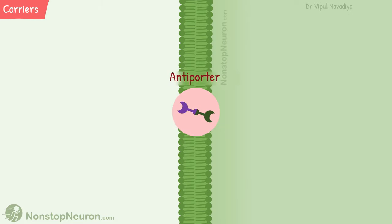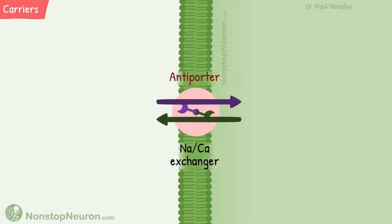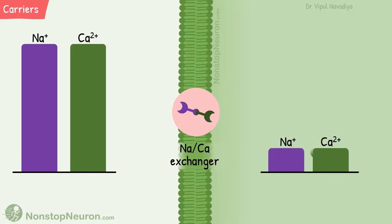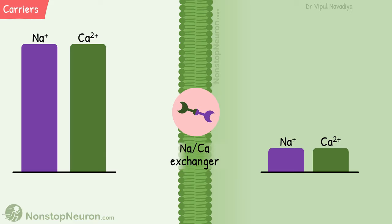Now antiporters — they move molecules in opposite directions. For example, the sodium-calcium exchanger. Sodium and calcium both have higher concentrations outside the cell compared to the inside. The uphill movement of calcium is energized by the downhill movement of sodium into the cell, but calcium is moving out of the cell. The ions are moving in opposite directions, and thus the name exchanger.